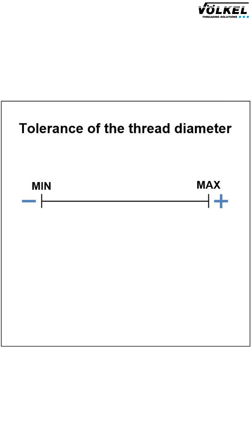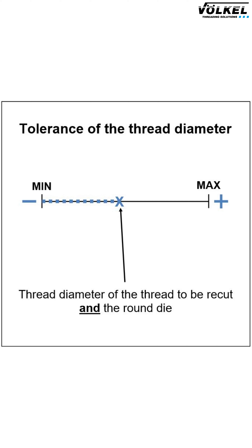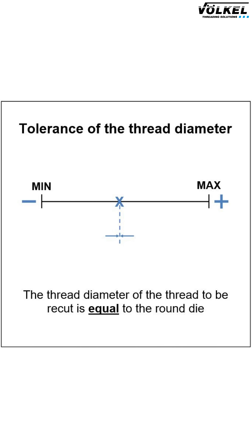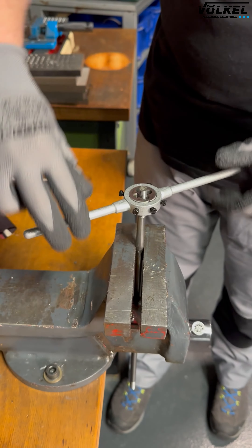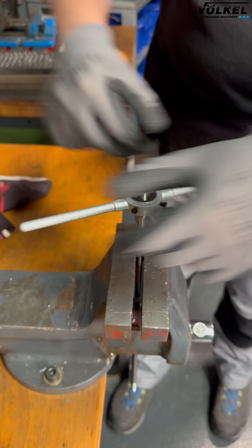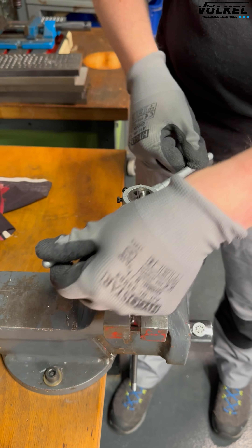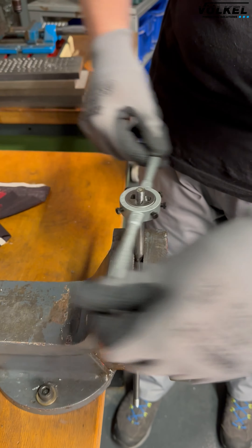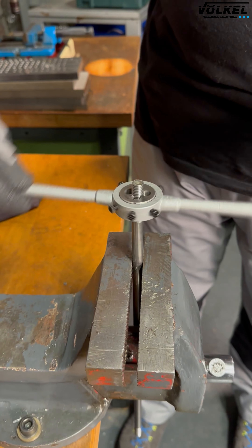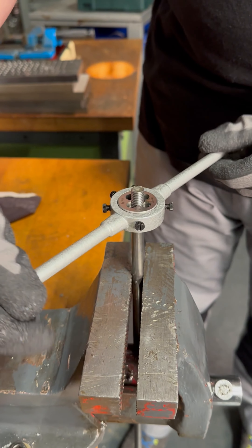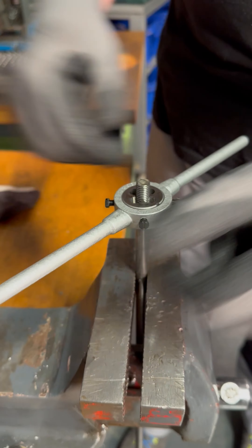However, it may also be the case that the thread diameter of the round die is exactly or approximately the same as the diameter of the thread to be recut. If this is the case, the die can be turned onto the thread to be recut with moderate force and without any noticeable gap. The thread is smoothed with little or no chip removal.